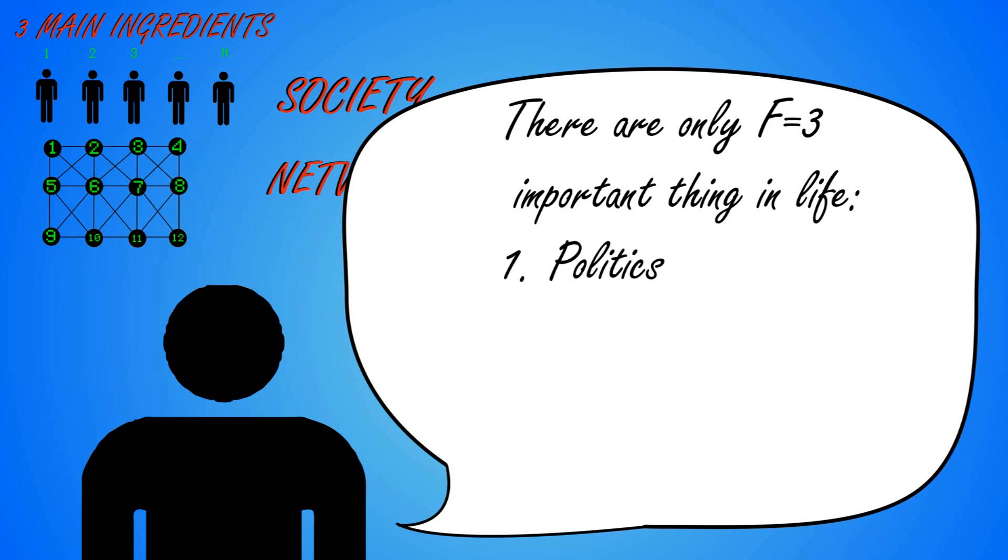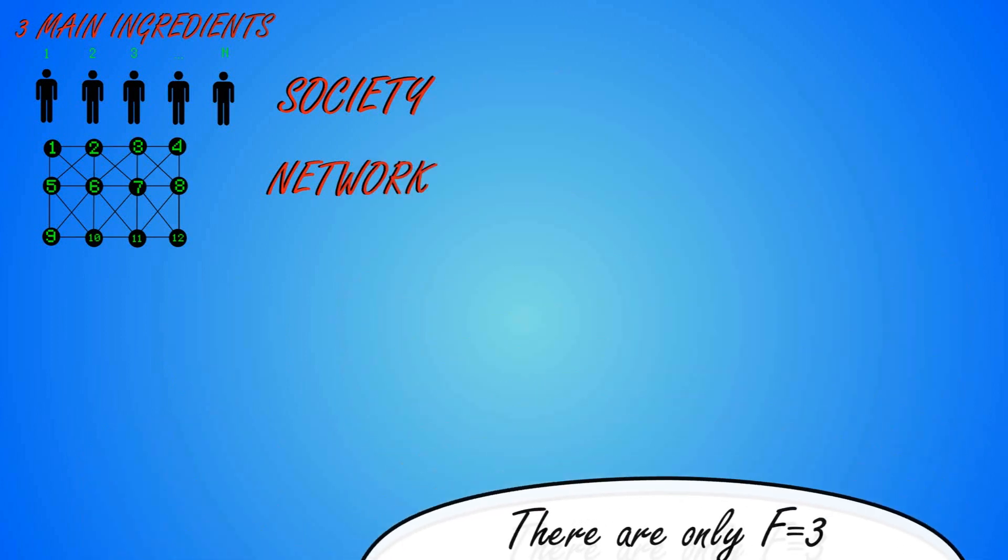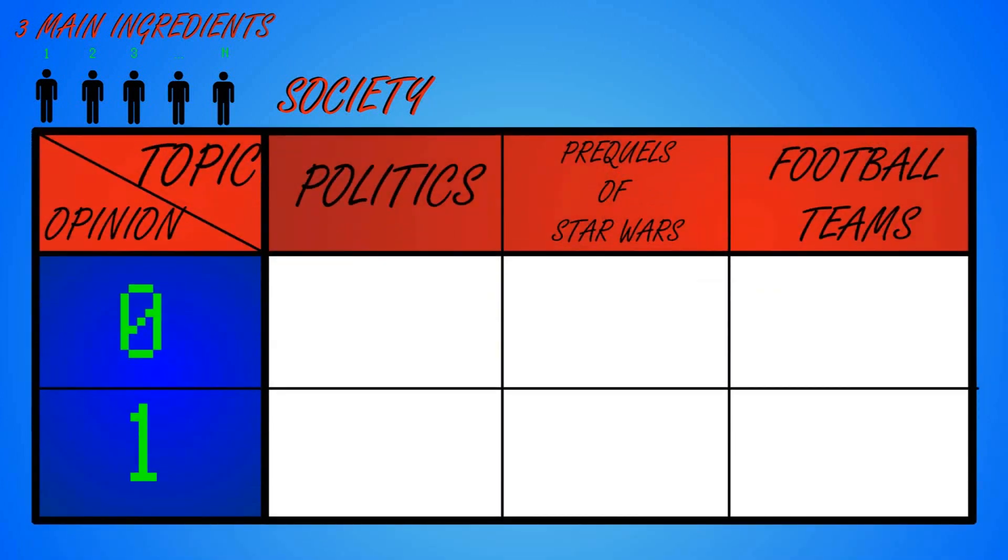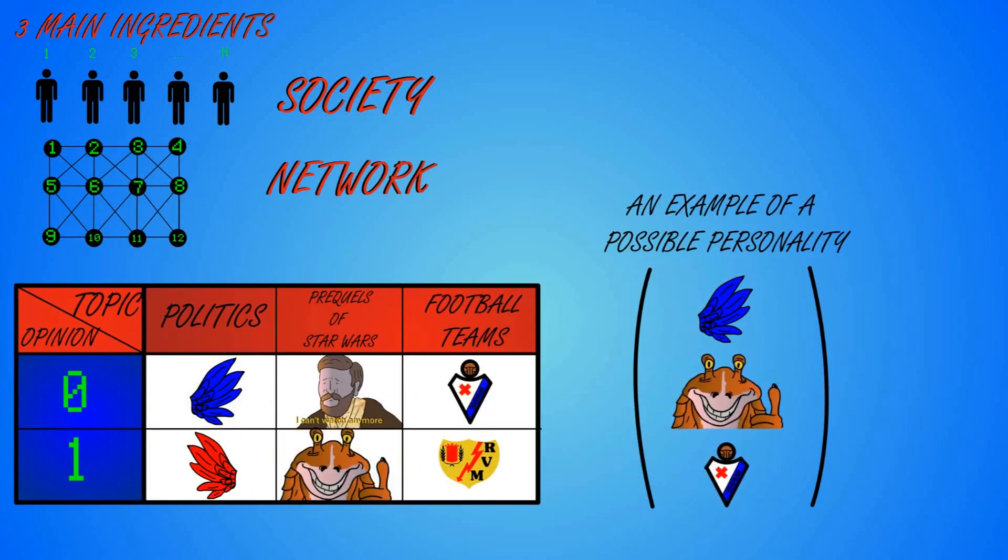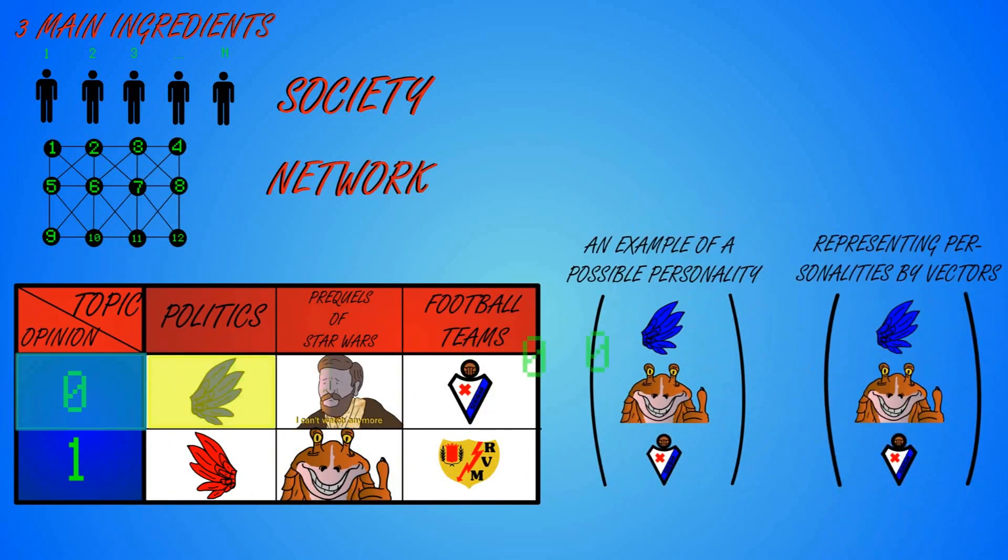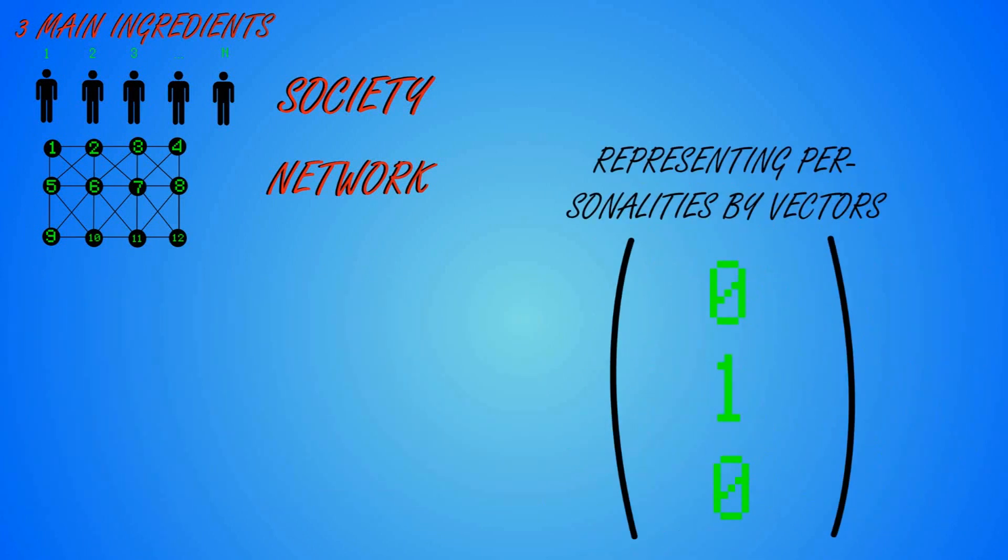For example, F could be 1. Politics 2. Opinions about the prequels of Star Wars 3. Football teams. In this case, F equals 3, since there are 3 topics that people care about. And we will consider that for all of these different topics, individuals can choose to position themselves in a number, let's call it Q, of very differentiated opinions. For example, if Q equals 2, then people can think in a dichotomized way. Either they are right or left winged, they hate the prequels or only hate Jar Jar Binks, or they follow El Eibar or El Rayo Vallecano. This might be represented with a vector of three components that can only have two different values for each component. We can call this vector the personality of the individual.